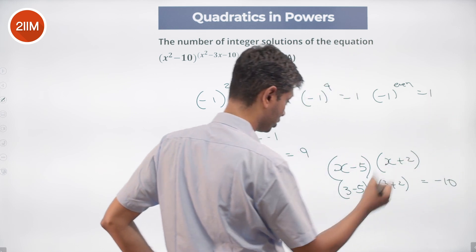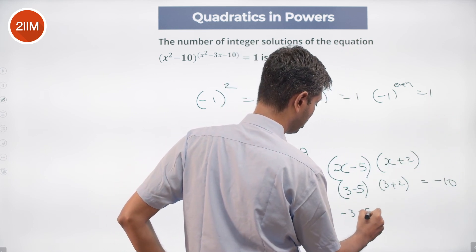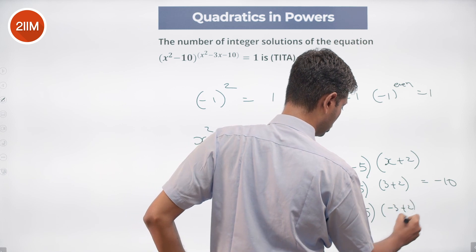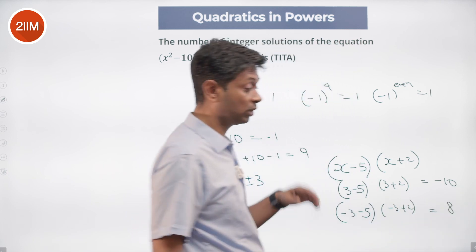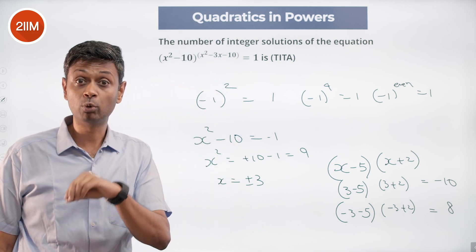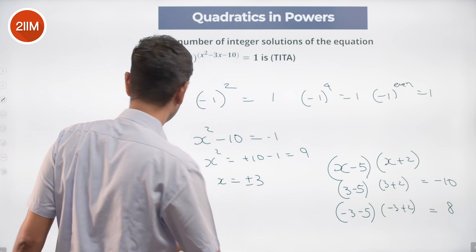I put -3: -3 - 5 times -3 + 2, which is -8 times -1, equal to 8. This also works. Both are even numbers, both work.